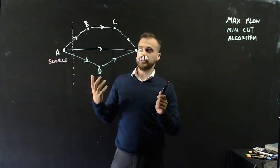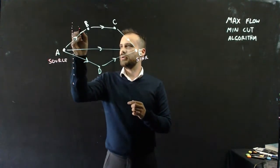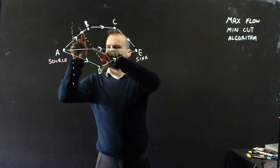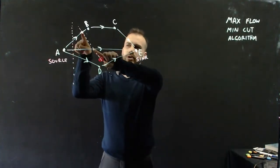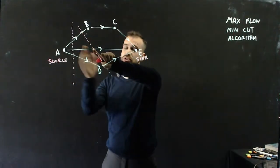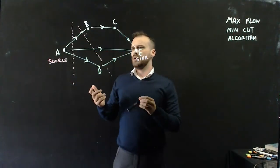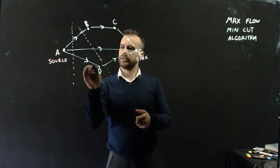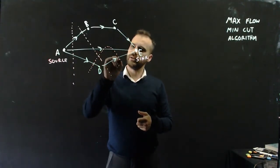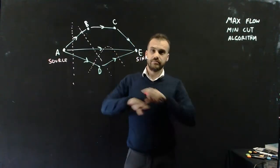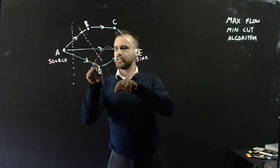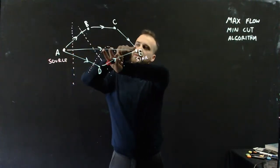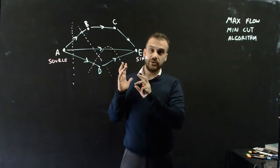There are other cuts as well. I could cut this network off instead by going like that — if I put a block there and a block there and a block there, water cannot get through this network. I've cut the source off from the sink. Let's say I put a cut somewhere else — well, like this. Is that a cut? No, that is not a cut. Because yes, I've put a block here, here, here, here, and here, but water can easily get from the source to the sink. So that is not a cut.